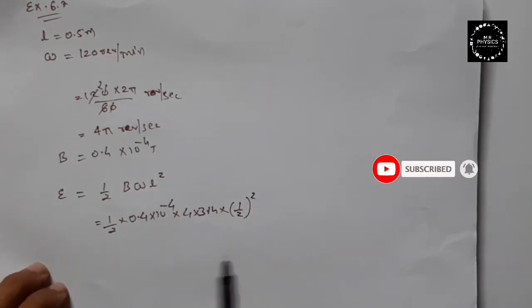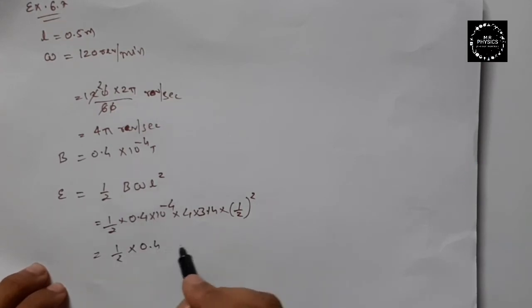Let me write it here: 0.4, 4, 3.14, and this is 1 by 4, and 10 raised to minus 4.